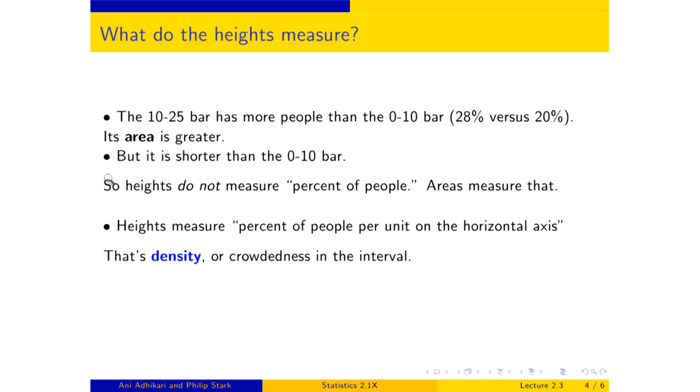The 10 to 25 bar has more people, but it is shorter. And that means it has more people, but it is less crowded. That's just like the United States having more people than Japan, but being less crowded, because it has correspondingly much more room.